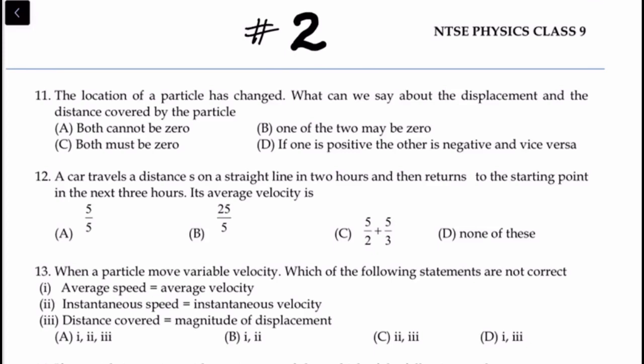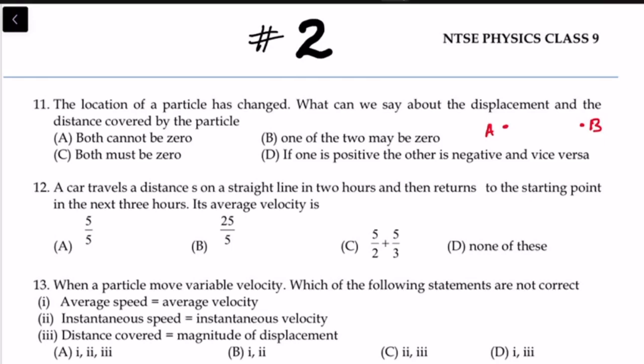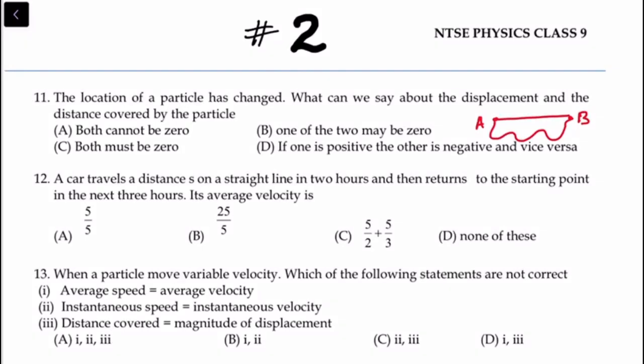Question number 11: The location of a particle has changed. What can we say about the displacement and distance covered by the particle? If a particle is going from A to B, it can go in different ways. Both cannot be zero; one of the two may be zero; or both must be zero — which is correct?